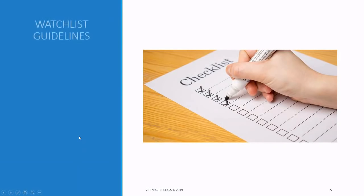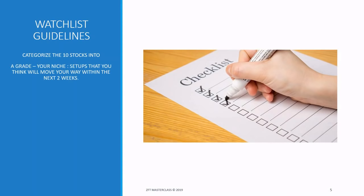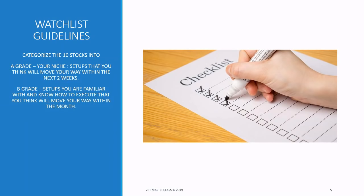Here are the watch list guidelines. Categorize the 10 stocks into grades. A grade is your niche — your bread and butter, the highest probability setups you can easily trade. These should move within two weeks. B grade stocks are those you think will move within the month.